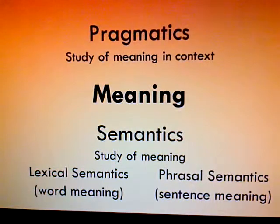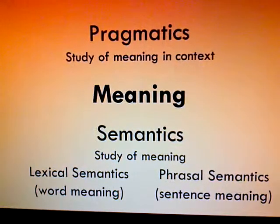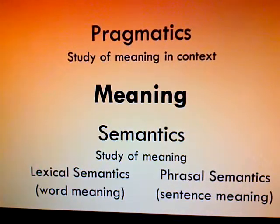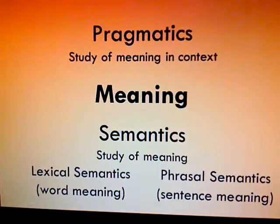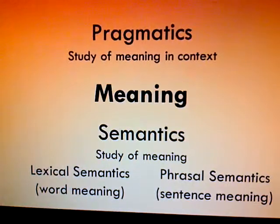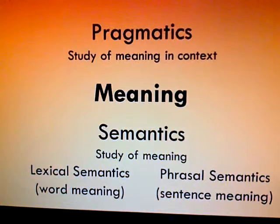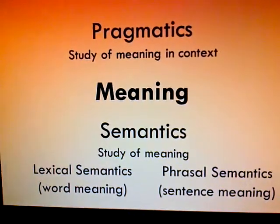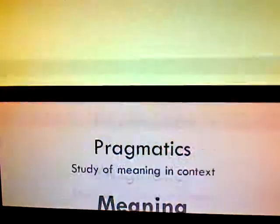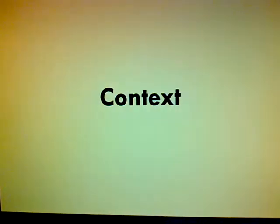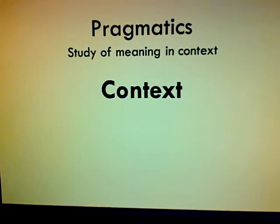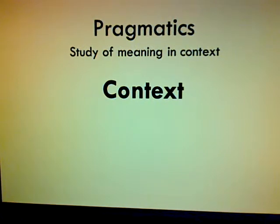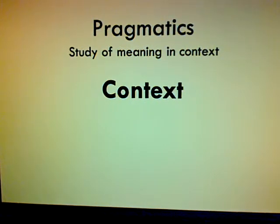That context includes different types of speech acts: conversations, instructions, promises, questions. A great example of how meaning is affected by context is sarcasm, where a single word can impose two opposite meanings. Pragmatics looks at language in context, but only at a local level — conversations and interactions.